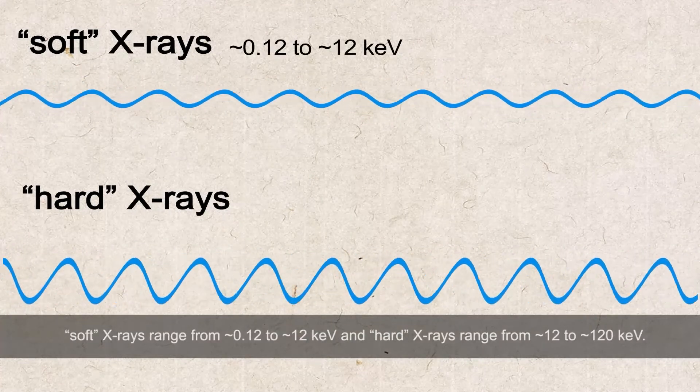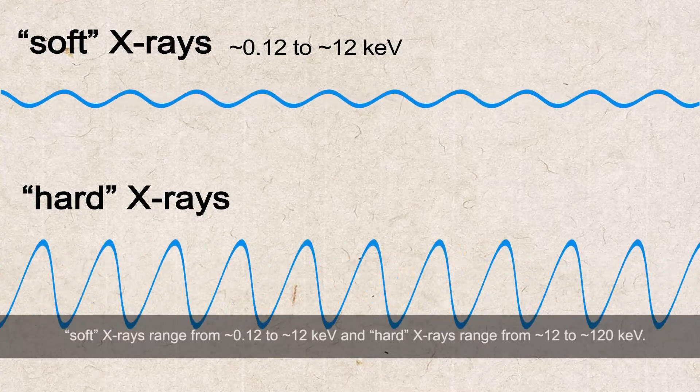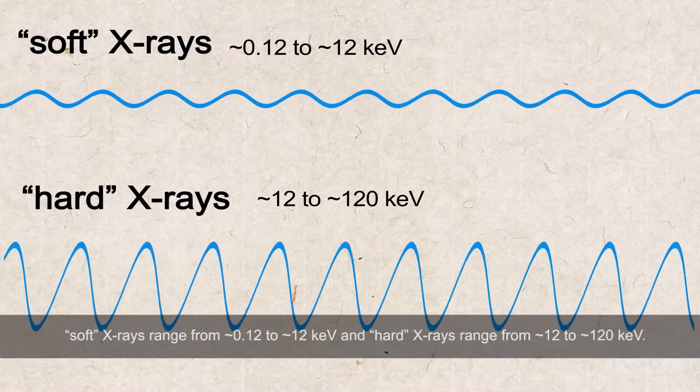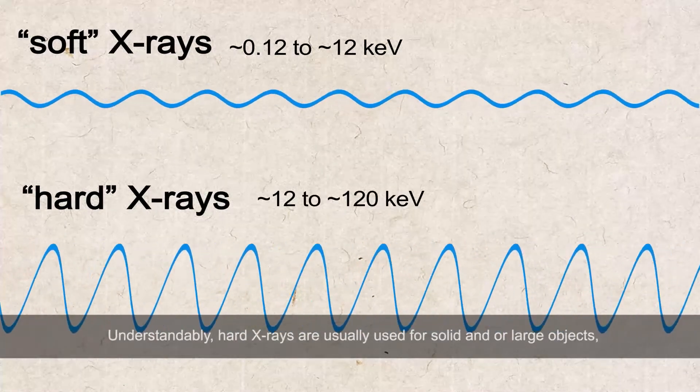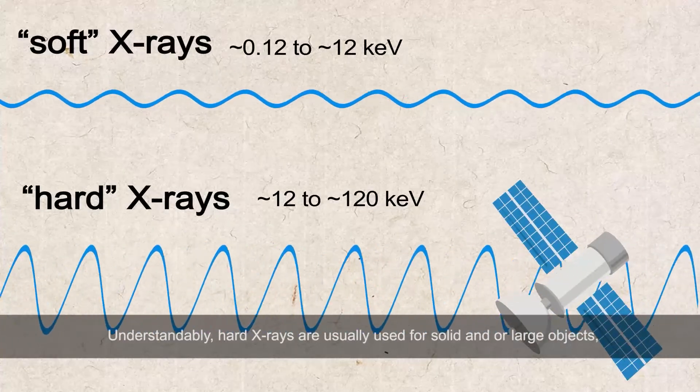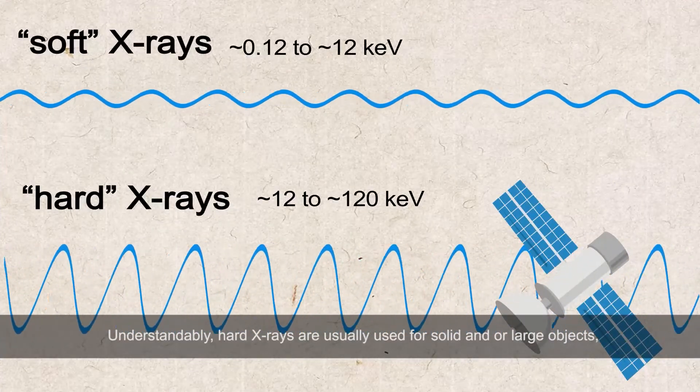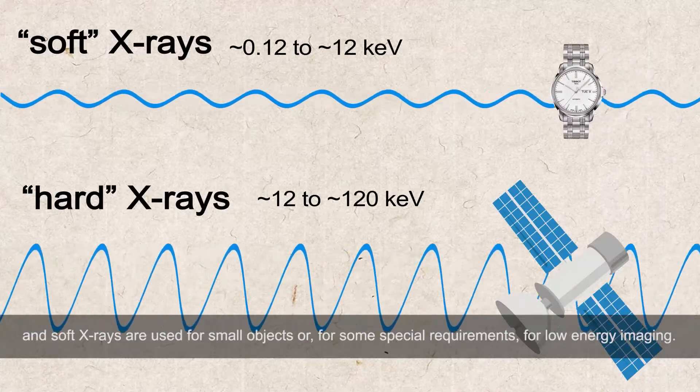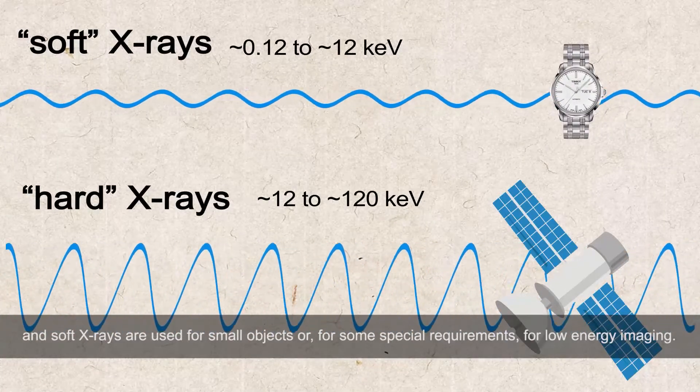Generally, X-rays are classified as soft or hard according to their energy range. Soft X-rays range from 0.12 to 12 kiloelectron volt, and hard X-rays range from 12 to 120 kiloelectron volt. Understandably, hard X-rays are usually used for solid and/or large objects, and soft X-rays are used for small objects or for some special requirements for low energy imaging.